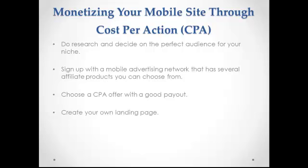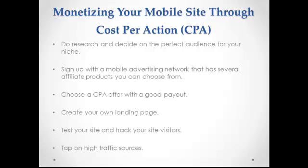Create your own landing page — make it brief and straight to the point. Highlight the benefits that your prospective client gets from buying the product. Make sure the call to action button is visible on your mobile site. Test your site and track your site visitors. Some mobile affiliate networks have tracking systems in place that allow you to see how many visitors you get every day and how many of your leads are converting to sales. Tap on high traffic sources — consider social networks, forums, YouTube, and other video sharing networks that can bring in highly targeted traffic to your mobile site.